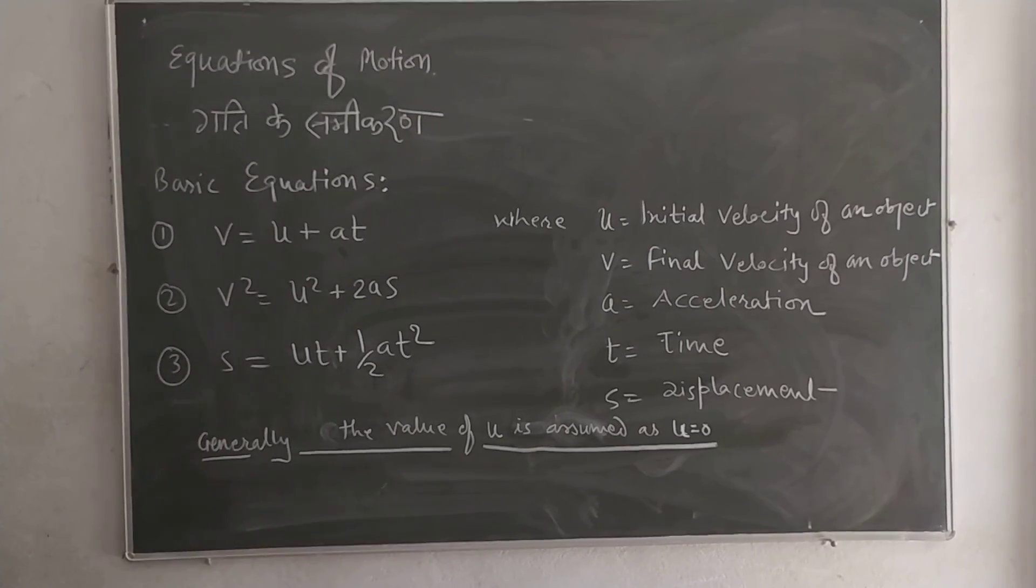But velocity determines the particular time period - starting from t = 0 seconds, then one second, two seconds, three seconds. That is velocity. When we talk about velocity, u equals initial velocity.